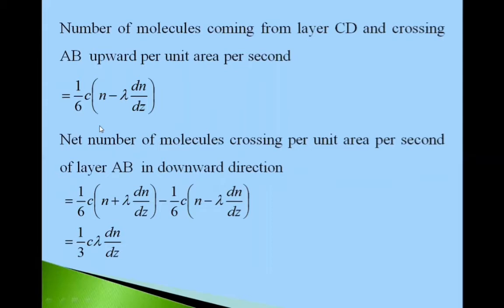We have to take difference of this number of molecules coming from layer EF and layer CD. Here we have taken the difference: 1 upon 6 into C into N plus lambda dN by dz minus 1 upon 6 C into N minus lambda dN by dz. Simplifying this, we get one third C lambda dN by dz.